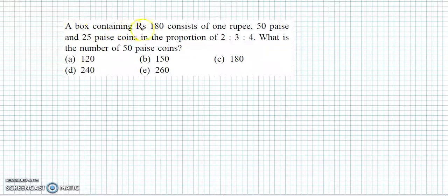A box containing rupees 180 consists of one rupee, 50 paise and 25 paise coins in the proportion of 2:3:4. What is the number of 50 paise coins? So humare paas yahaan one